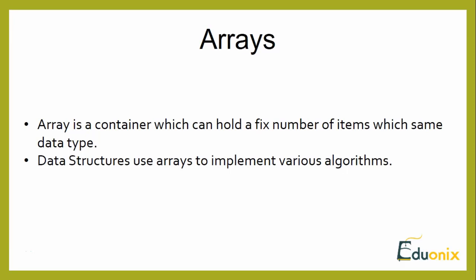This chapter is about understanding the complete concepts of arrays. An array is a data structure or container which can hold a fixed number of items, and those items must all be the same data type — all numbers, strings, or integers. It cannot be a combination of different types. Data structures use arrays to implement various algorithms.